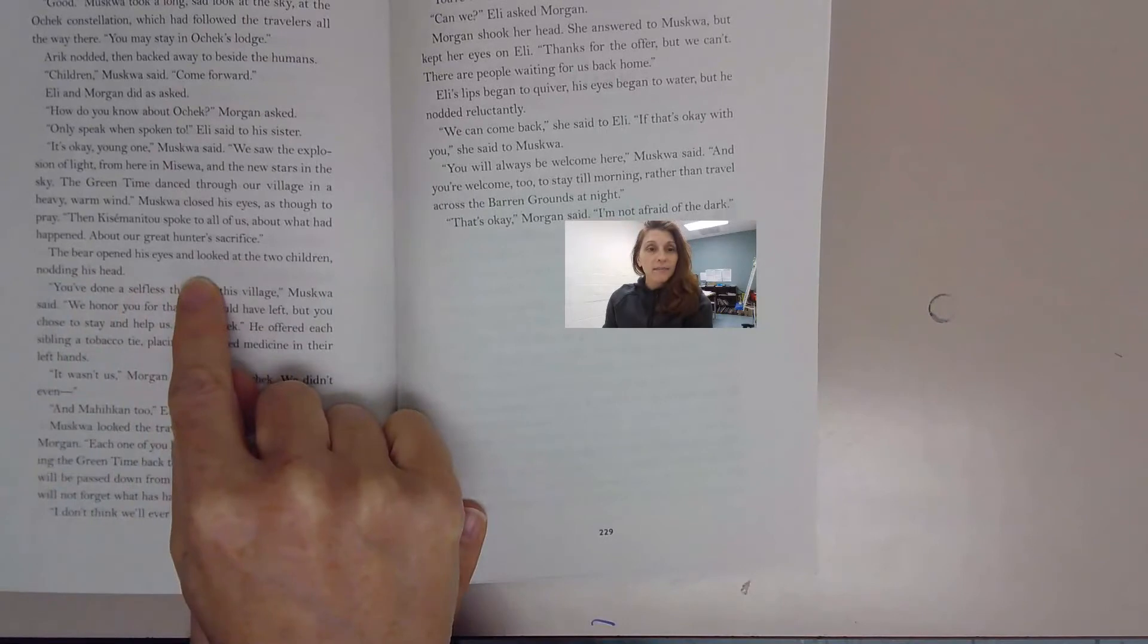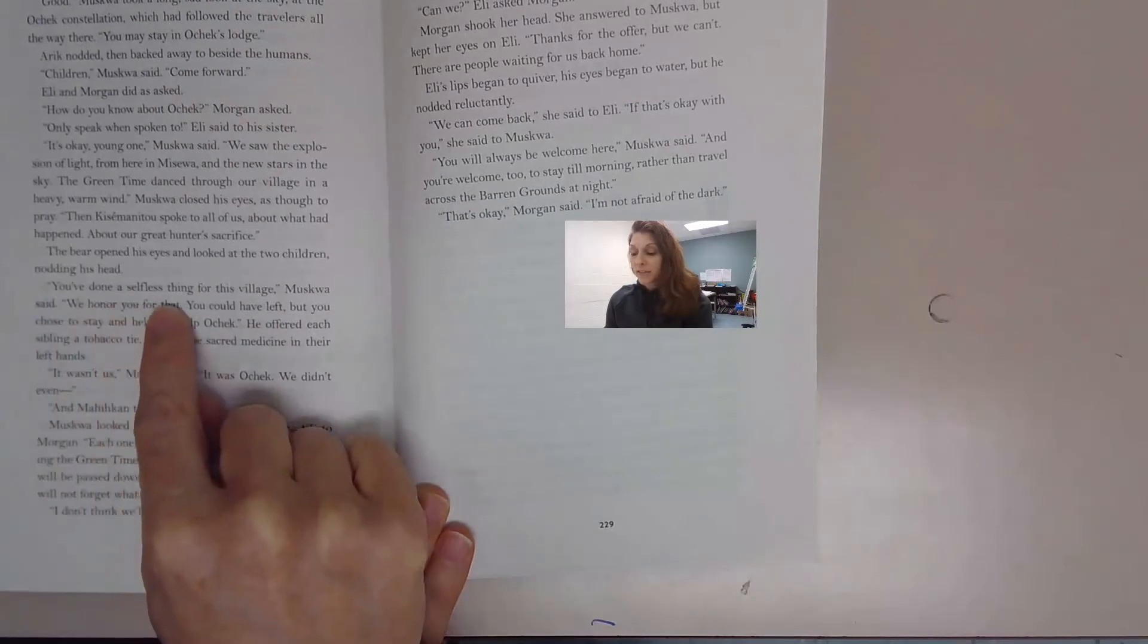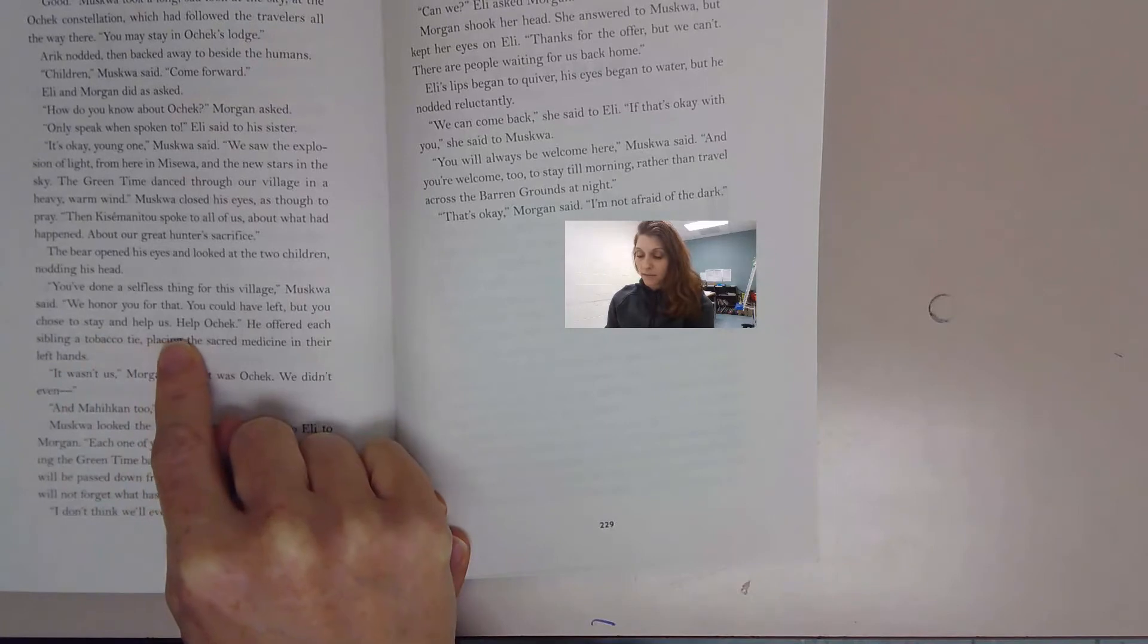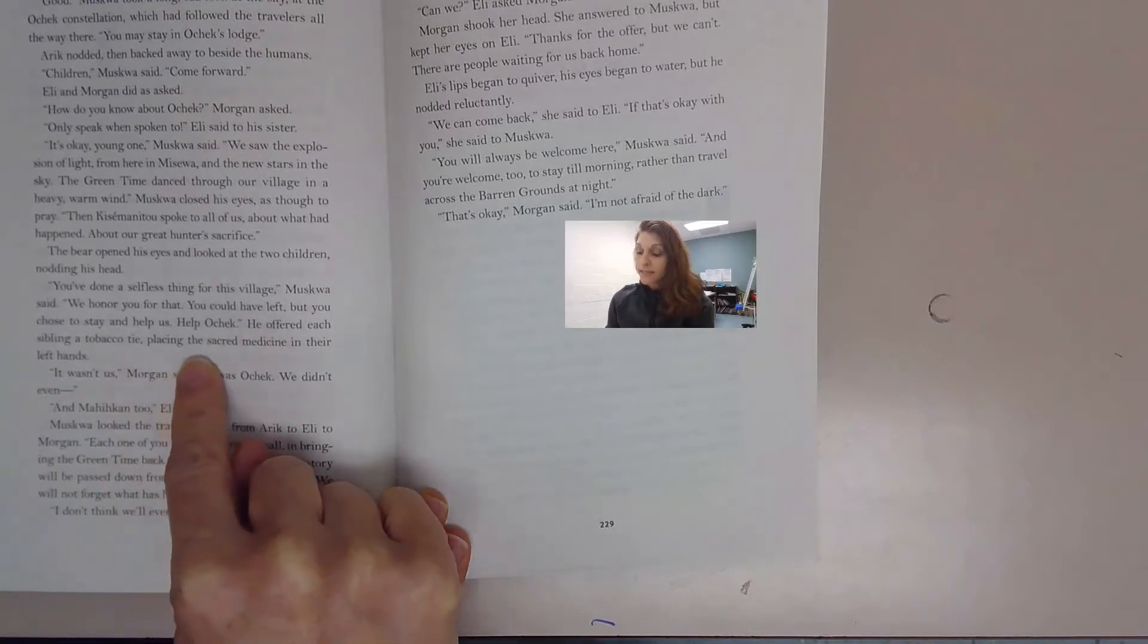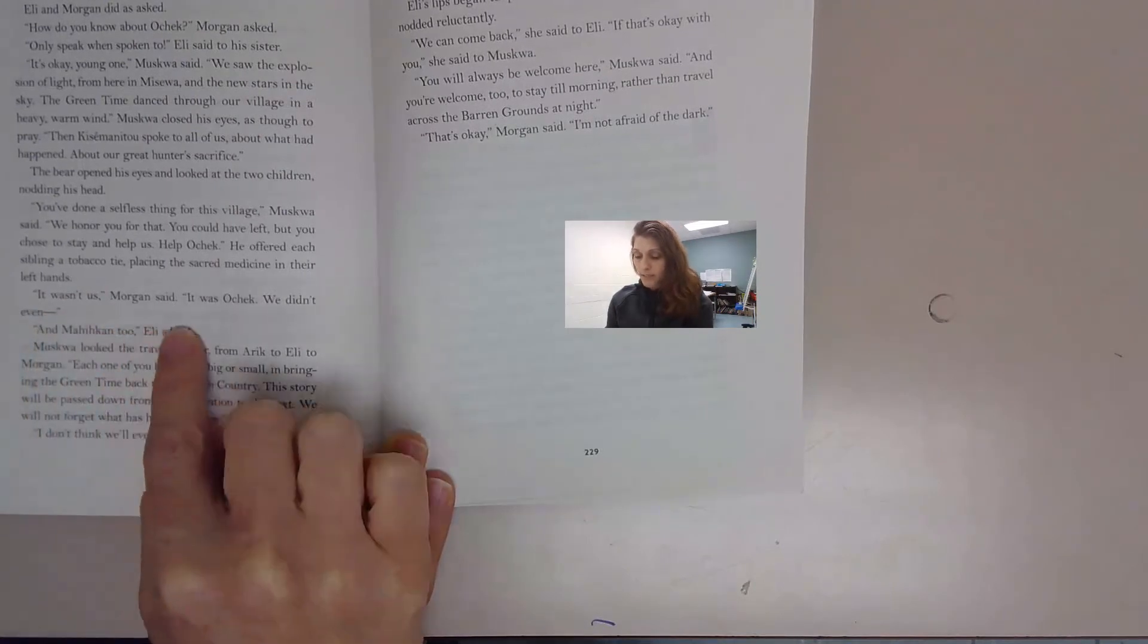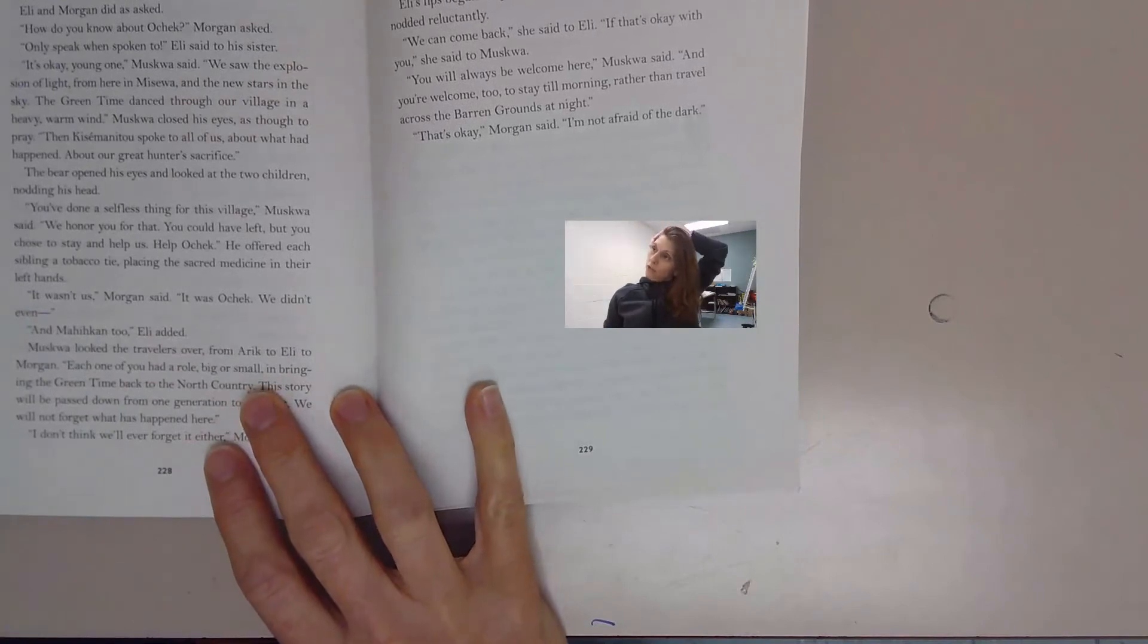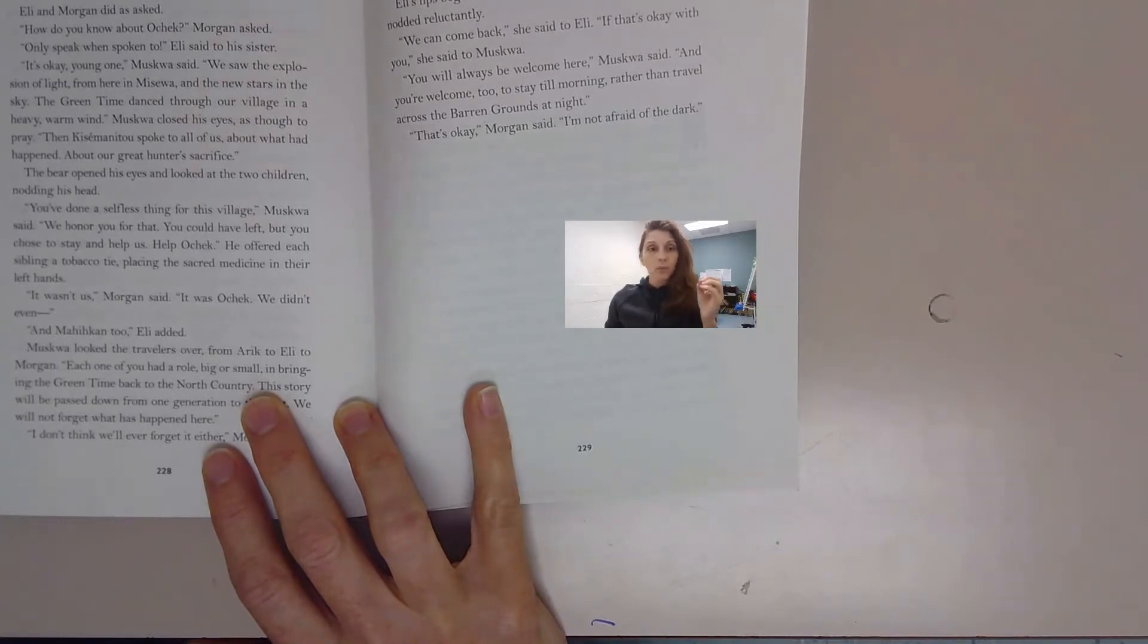The bear opened his eyes and looked at the two children, nodding his head. You've done a selfless thing for this village, Muskwa said. We honor you for that. You could have left, but you chose to stay and help us, help Ocek. He offered each sibling a tobacco tie, placing the sacred medicine in their left hands. It wasn't us, Morgan said. It was Ocek. We didn't even, and Mahikain too, Eli added. Eli is very concerned about this. He wants to ensure that the wolf is recognized for what the wolf did.